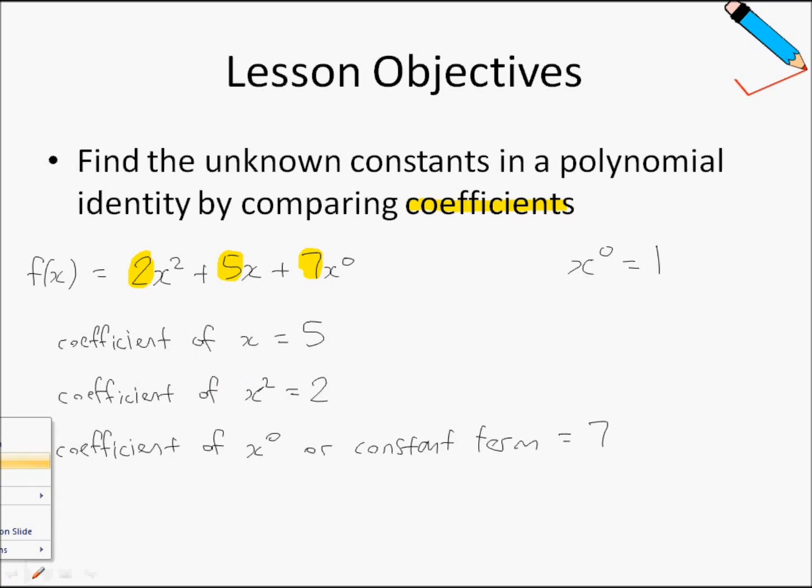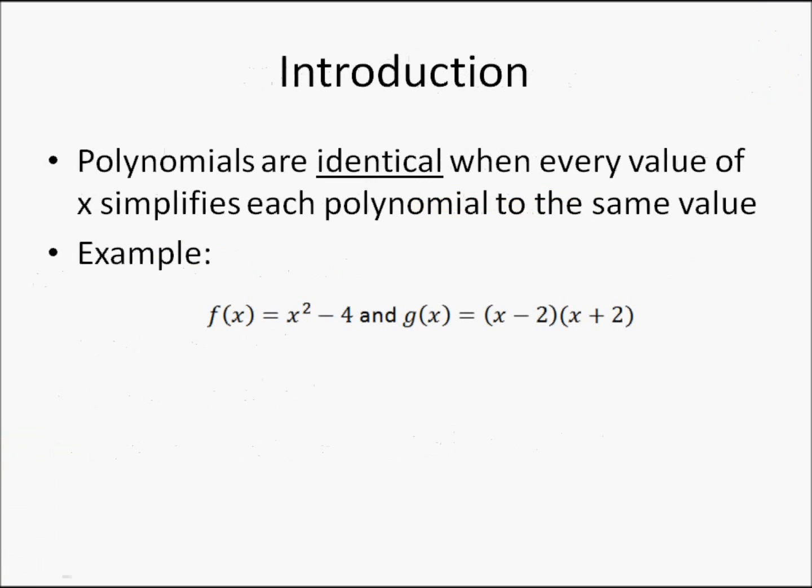Now, let's move on to the definition of the term identical. Polynomials are identical when every value of x simplifies each polynomial to the same value. Let me use a more tangible example to explain what this means.